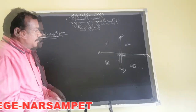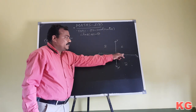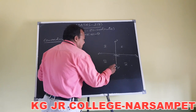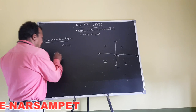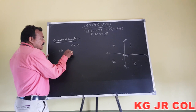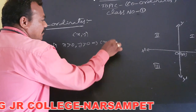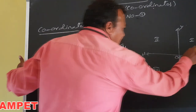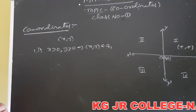In the first quadrant, both x and y are in the positive direction, so the coordinates are (+, +). In the second quadrant, x is negative and y is positive, so the signs are (-, +). In the third quadrant, both x and y are negative (-, -). In the fourth quadrant, x is positive and y is negative (+, -).